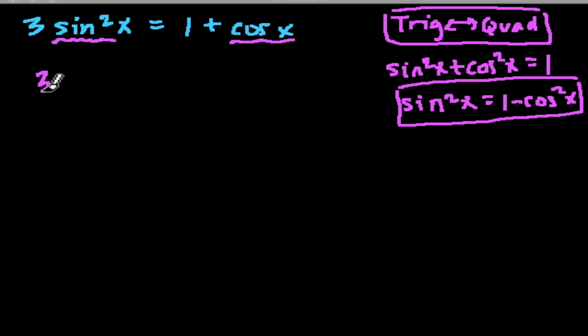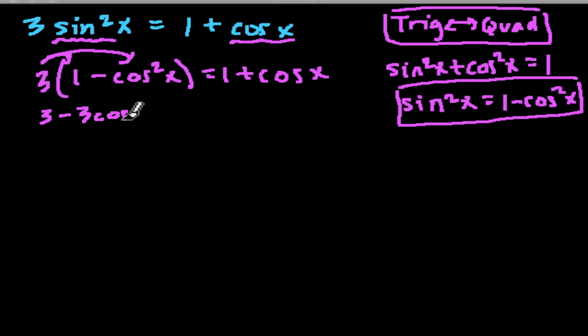So now we have 3 times, instead of sine squared of x, 1 minus the cosine squared of x, and that's going to be equal to 1 plus the cosine of x. Now I can distribute this 3 to the parts in the parentheses, 3 times 1 and then 3 times minus cosine x, so we get 3 minus 3 cosine squared of x equals 1 plus the cosine of x.